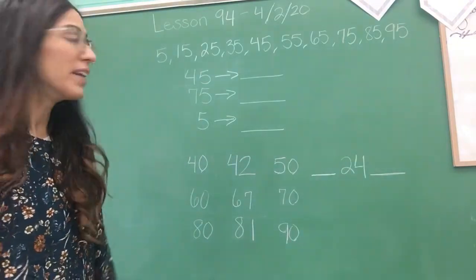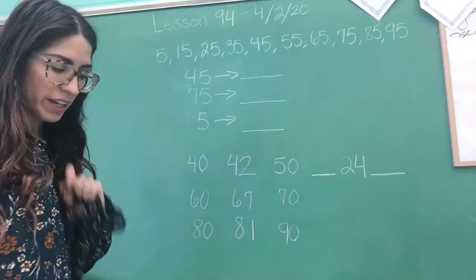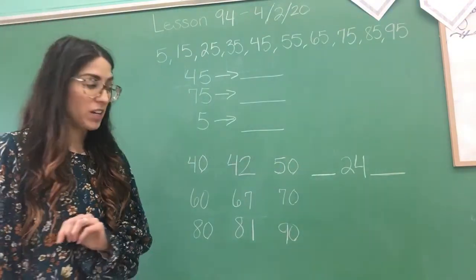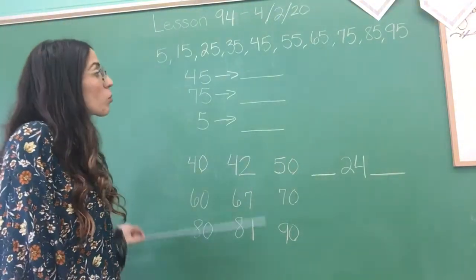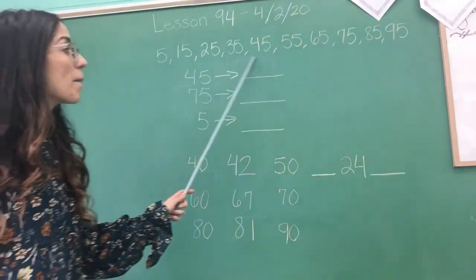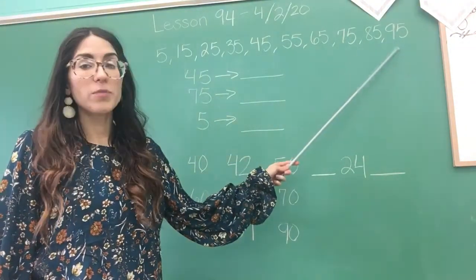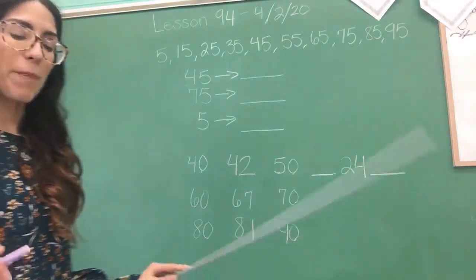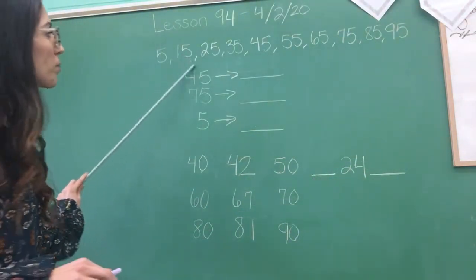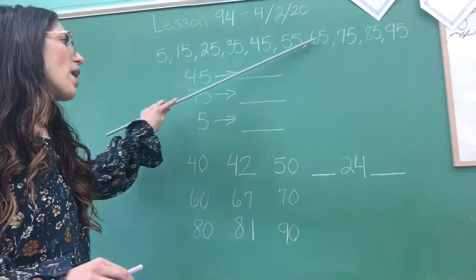Now today we're going to be talking about rounding to the nearest ten. So I broke down some numbers on the board. As you can see here, these numbers are basically in the middle whenever we round.